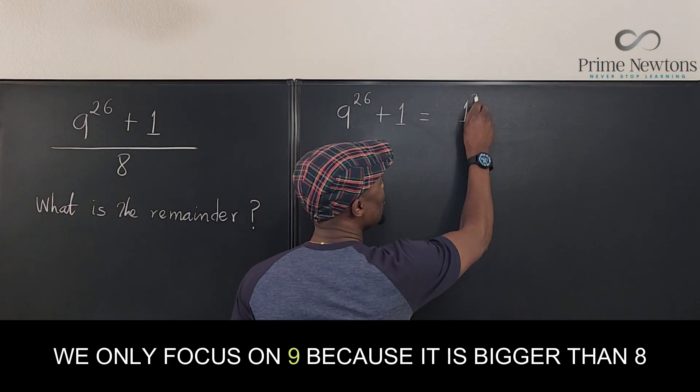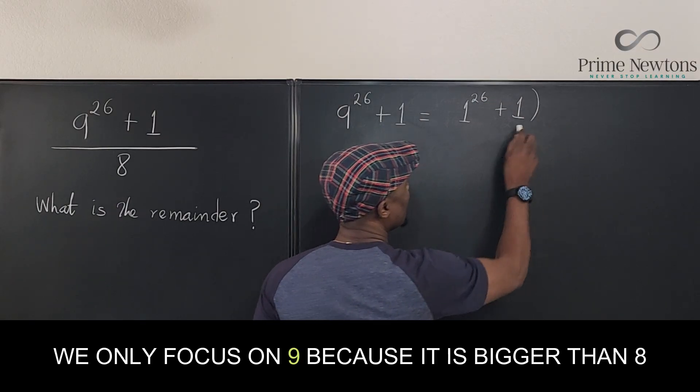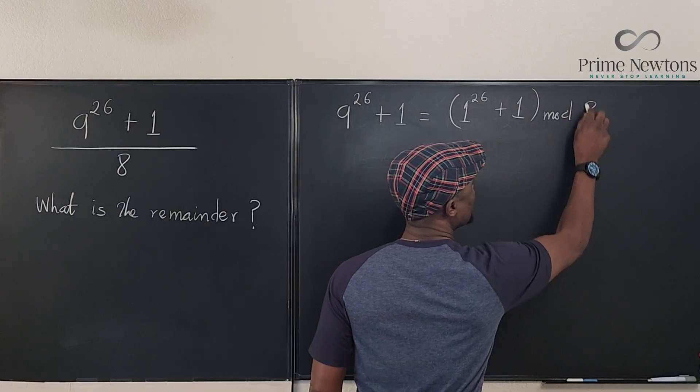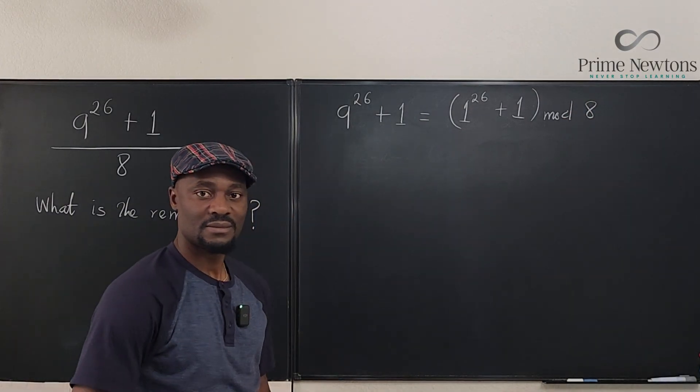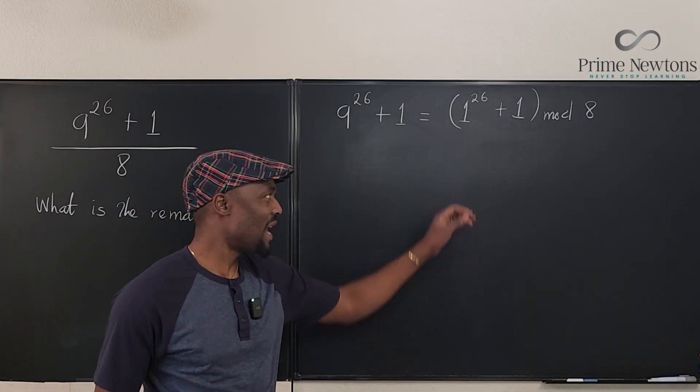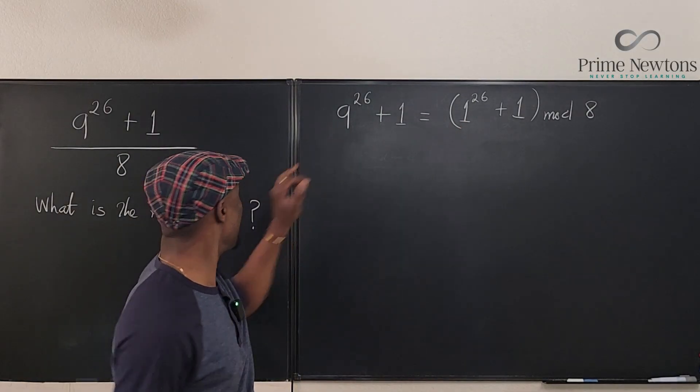That is the number that remains after you divide 9 by 8. So this is the same thing as 1 raised to power 26 plus 1 mod 8. That's it. You see what I just did?